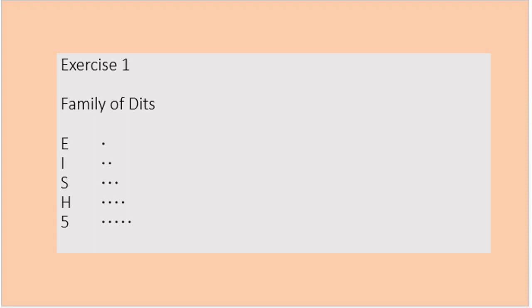The message begins with BT and ends with AR, which you are not supposed to write. Bravo Tango and Alpha Romeo will each be combined to sound as one signal. Bravo and Tango will be combined to sound one signal.